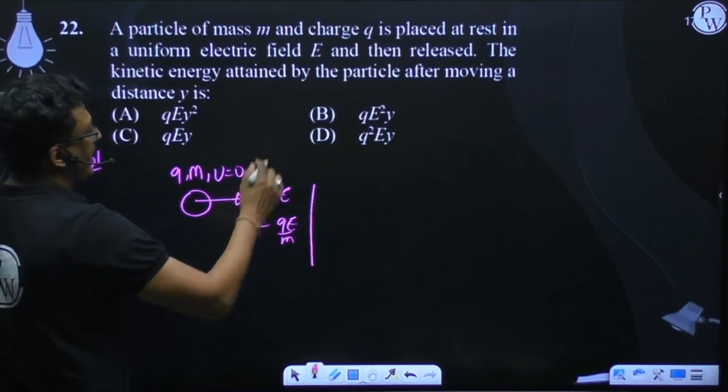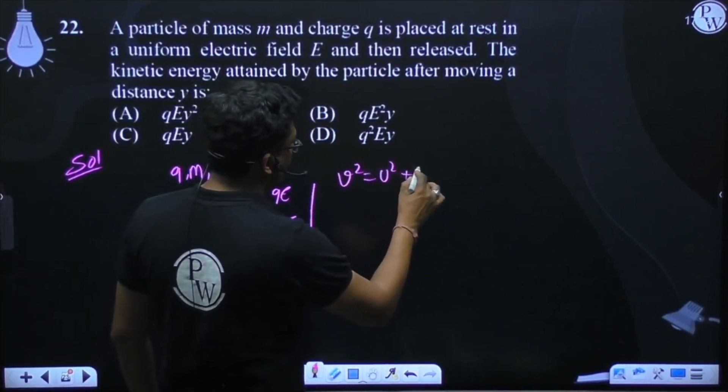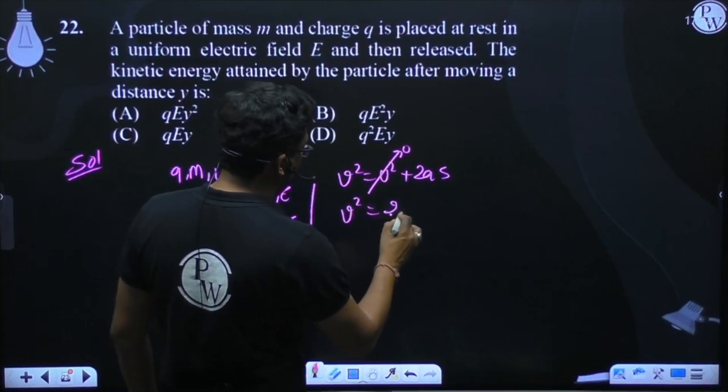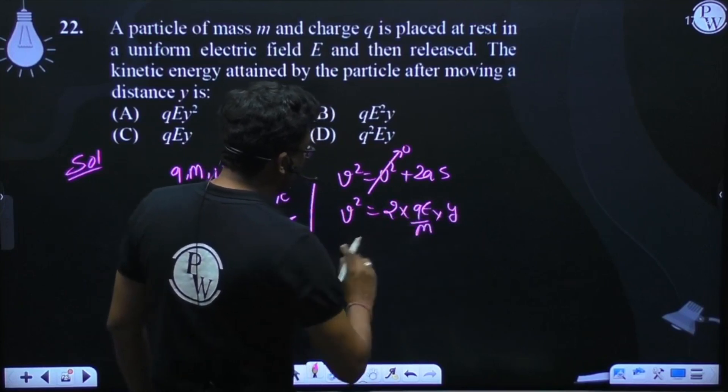And now we use the kinematic equation V square equals U square plus 2AS. Initial velocity is 0, so V square is equal to 2 into QE by M into Y. This is V square.